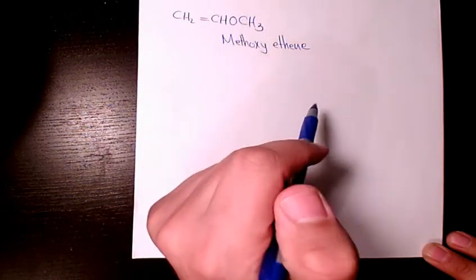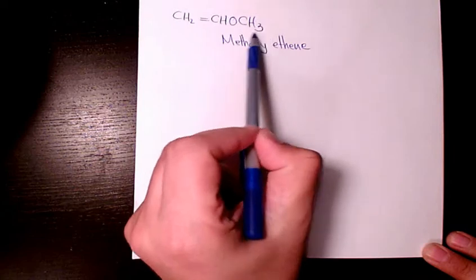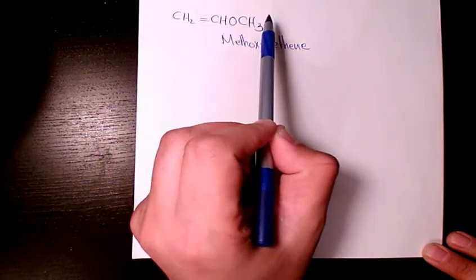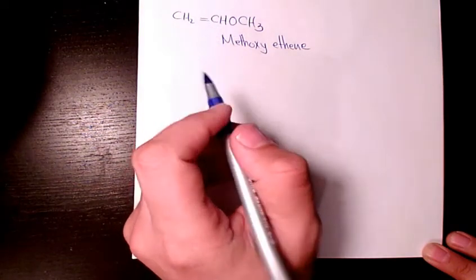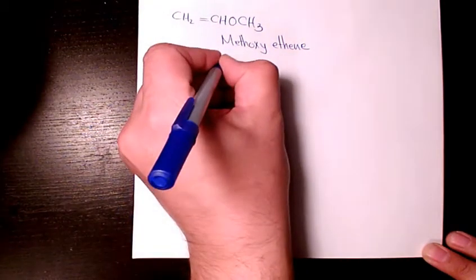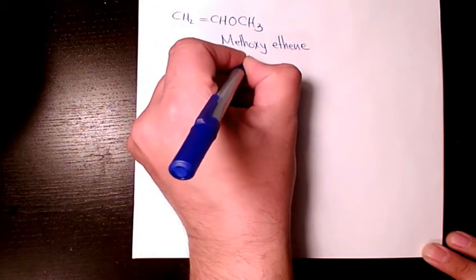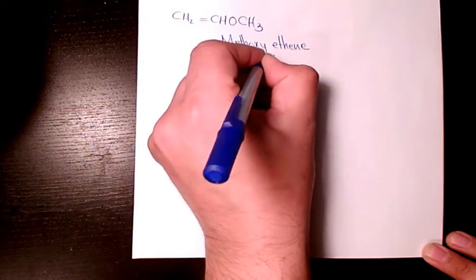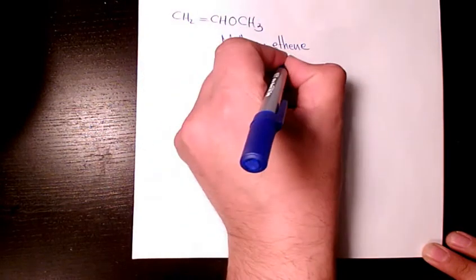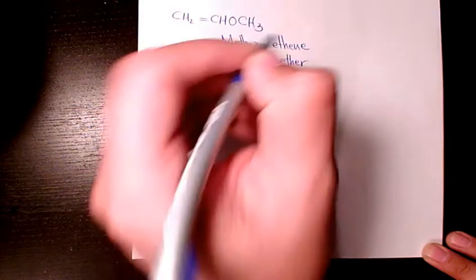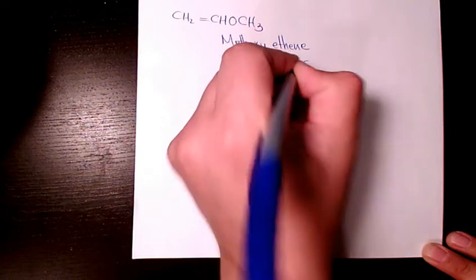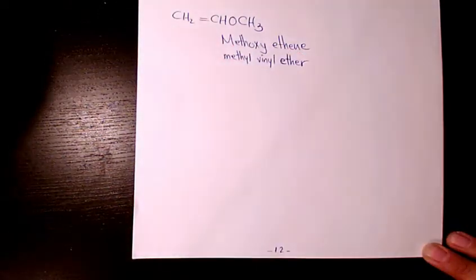For the common name, here we have a methyl group and here we have ethene. If you take one hydrogen out it's going to be vinyl, so we have methyl vinyl — or vinyl ether. So methyl vinyl ether is going to be the common name.